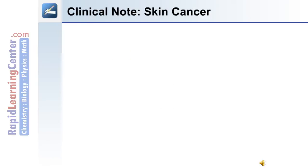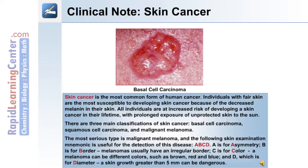The following is a clinical note on skin cancer. Skin cancer is the most common form of human cancer, and individuals with fair skin are the most susceptible to developing skin cancer because of the decreased melanin in their skin. However, all individuals are at increased risk of developing skin cancer with prolonged exposure of unprotected skin to the sun. There are three main classifications of skin cancer: basal cell carcinoma, squamous cell carcinoma, and malignant melanoma.